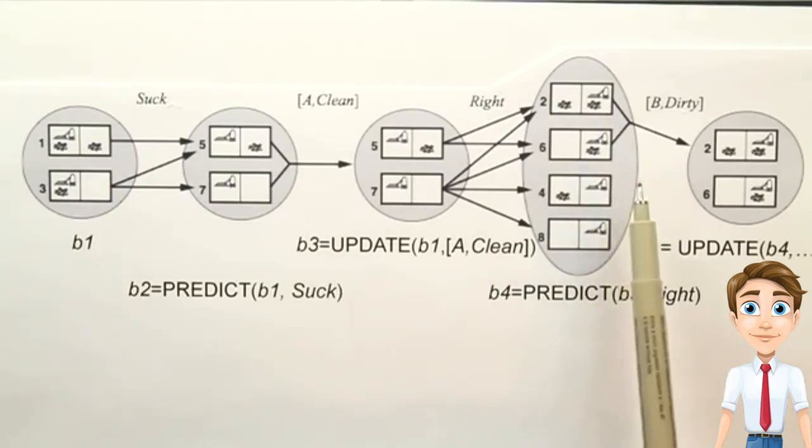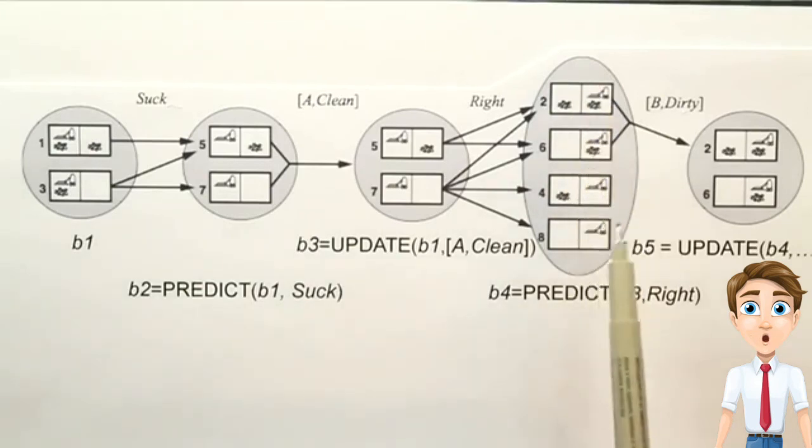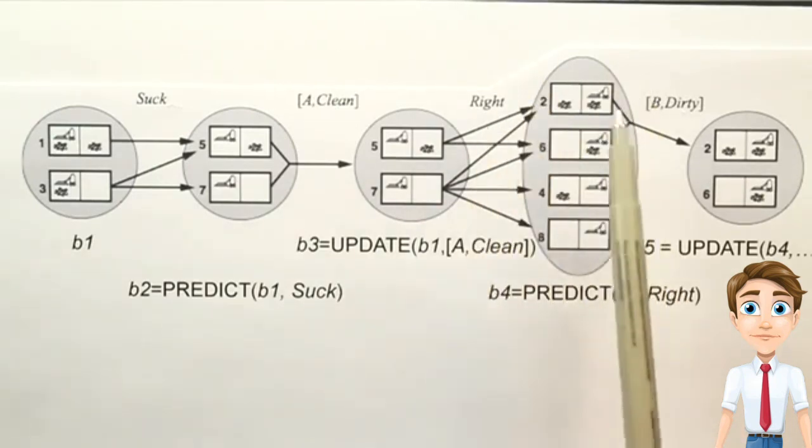And it seems that there may be more succinct representations of a belief state, rather than to just list all the world states. For example, take this one here. If we had divided the world up, not into individual world states, but into variables describing that state, then this whole belief state could be represented just by vacuum is on the right.